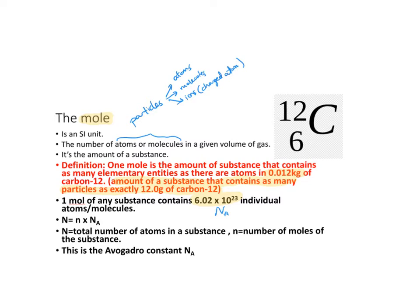Another easier definition, which I prefer, is that one mole is the amount of a substance that contains as many particles as exactly 12 grams of carbon-12. So basically what we're saying is that one mole of any substance contains so many individual atoms or molecules. So 6.02 times 10 to the 23, and that's known as the Avogadro constant, NA.